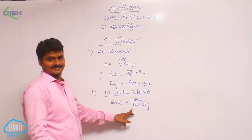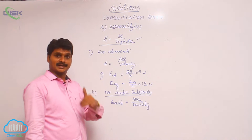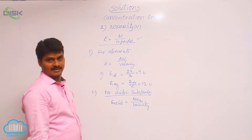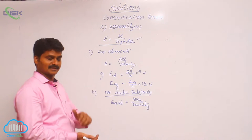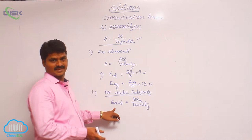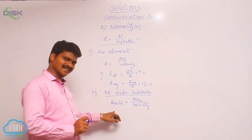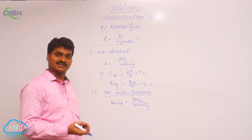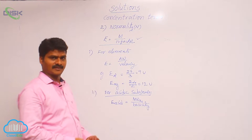What is basicity? For an acid, the total number of hydrogens present in the acid is not equal to its basicity. Some acids have the number of hydrogens and basicity the same, but for some acids basicity and number of hydrogens are not same — it depends on the structure of the acid. Basicity means the number of replaceable hydrogens of an acid.